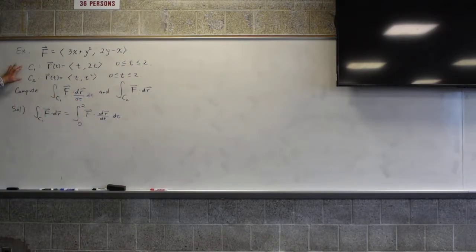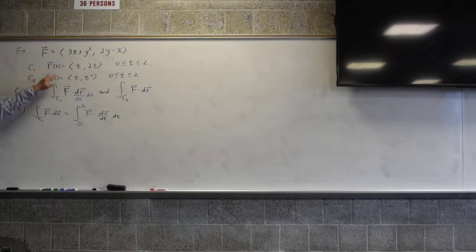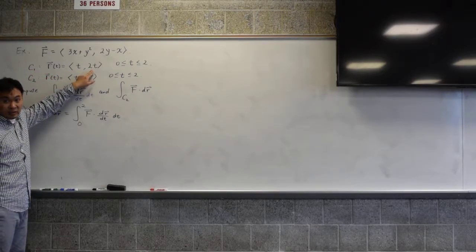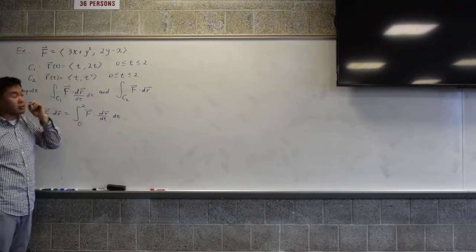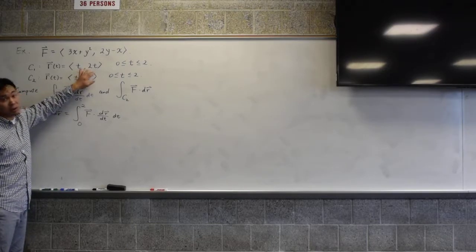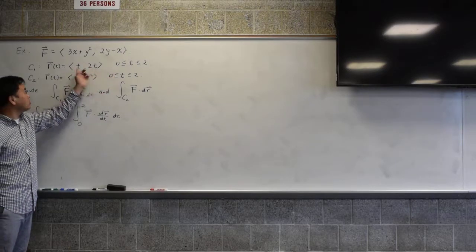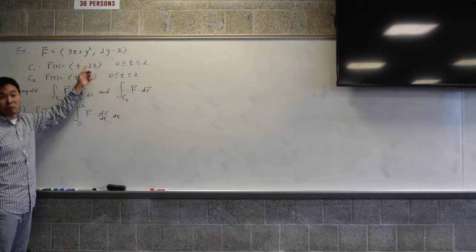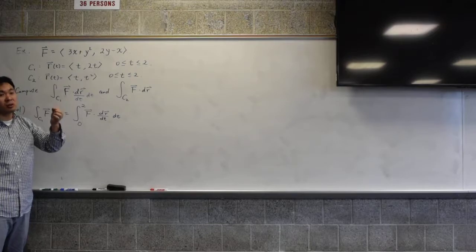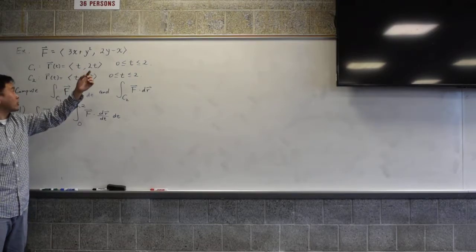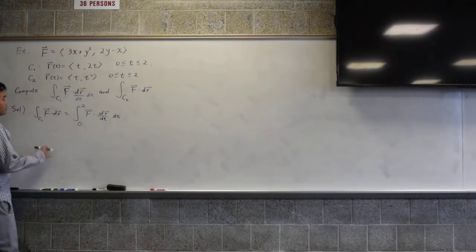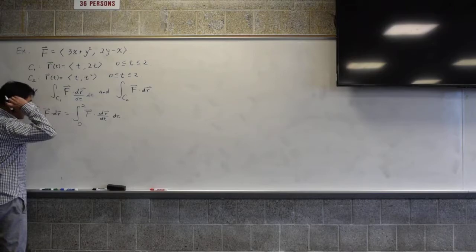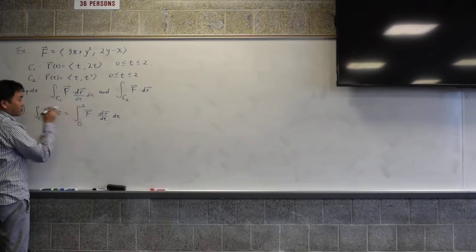By the way, what is C1? C1 is a straight path. See, it's a line equation. They're both first order. The graph will be a line. And when t is 0, it's (0, 0), so it starts at the origin. When t is 2, it ends at (2, 4). So it's a straight line from (0, 0) to (2, 4). That's what C1 is.